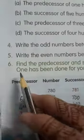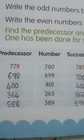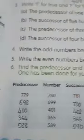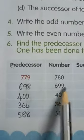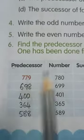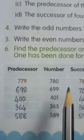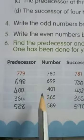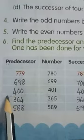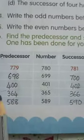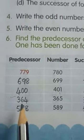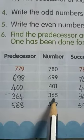Next, find the predecessor and successor of the following numbers. Here the numbers are given and we have to write the predecessor and successor, that is the before and after numbers. What comes before 699? 698. What comes after 699? 700. What comes before 401? 400. What comes after 401? 402.